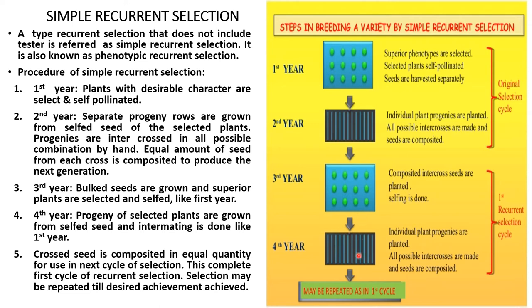In the fourth year, the progeny of the selected plants are grown from self-seed and intermating is done like the first year. Crossed seeds are composited in equal quantity for use in the next cycle of selection. This completes the first cycle of recurrent selection. Selection may be repeated until the desirable character is achieved.